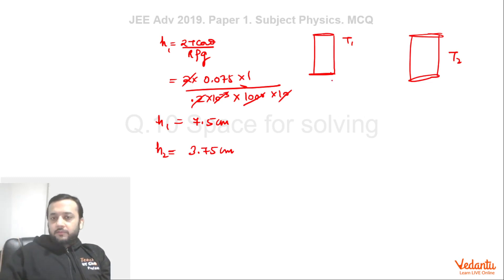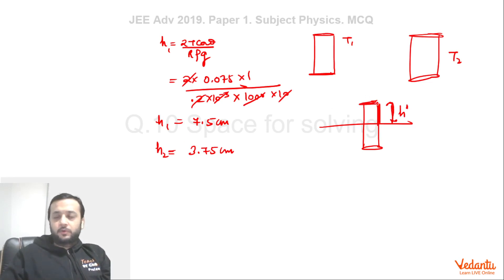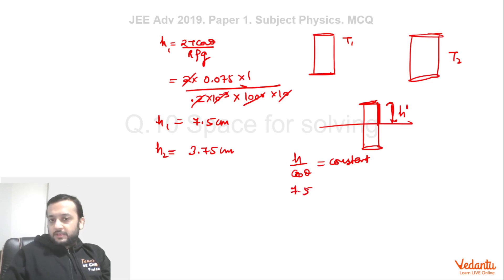What happens if we do not allow water to rise sufficiently? Suppose we insert a T1 capillary where the available height H' is less than 7.5 cm. Water will not overflow; rather, the angle of contact is going to adjust. Since T, R, ρ, g are constant, H / cosθ is a constant value. So 7.5 / cos 0° = H' / cos θ. Using this formula you can find the new angle of contact.